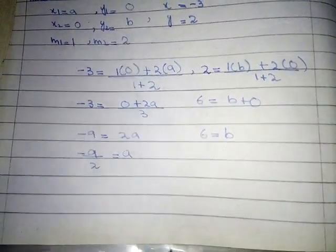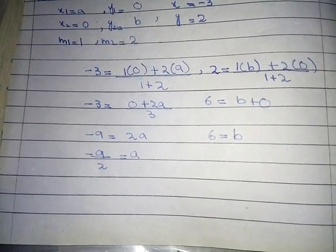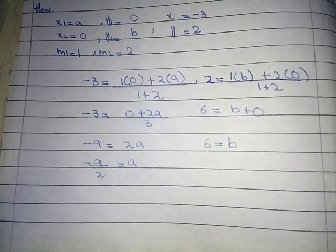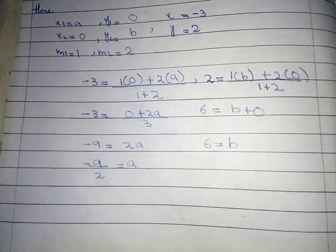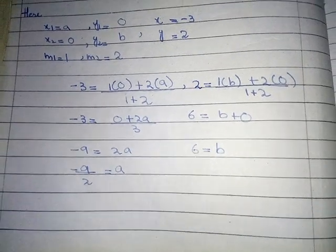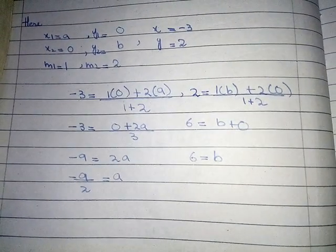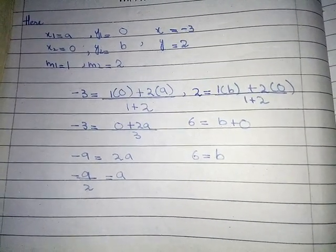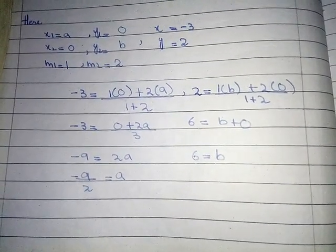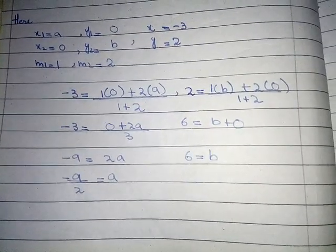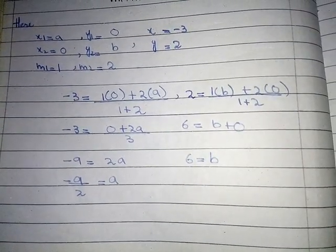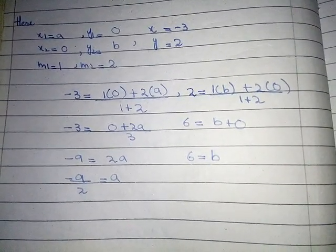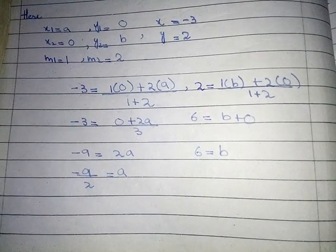Putting the values given in the question: -3 = (1×0 + 2a) / (1 + 2), and 2 = (1×b + 2×0) / (1 + 2).